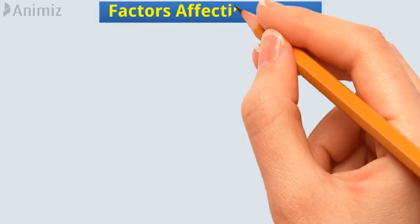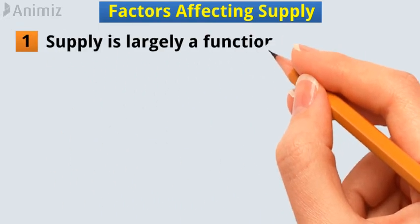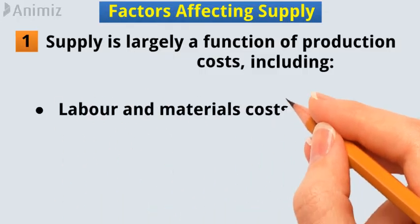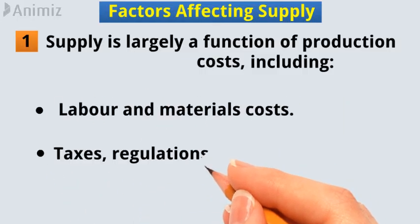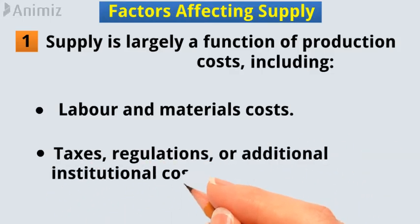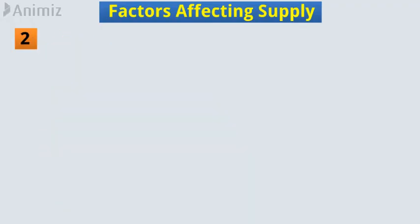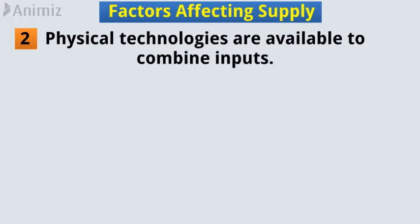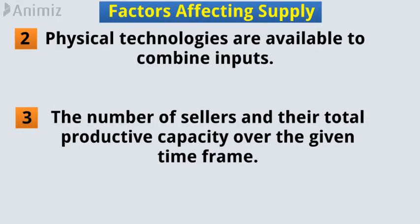Factors Affecting Supply: 1. Supply is largely a function of production costs, including labor and materials costs, taxes, regulations, or additional institutional costs of production. 2. Physical technologies available to combine inputs. 3. The number of sellers and their total productive capacity over the given time frame.